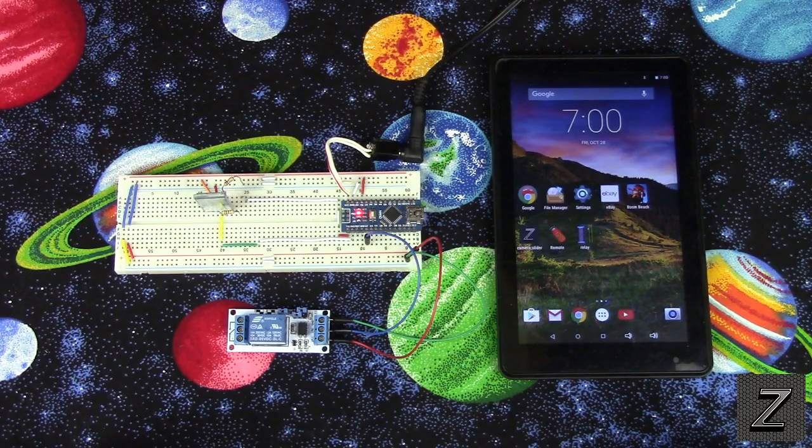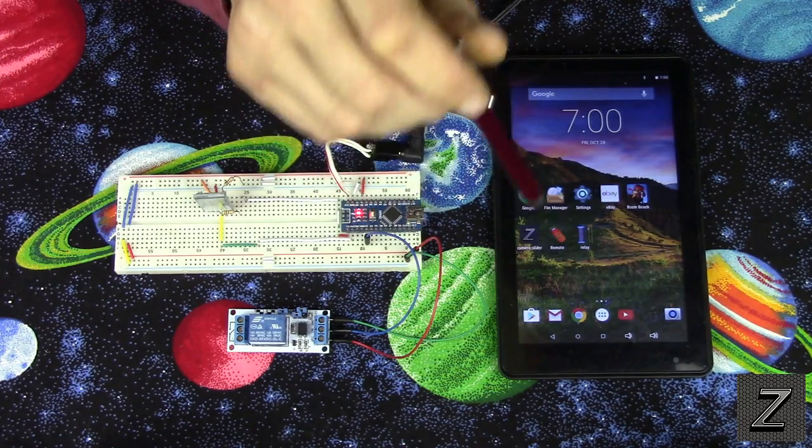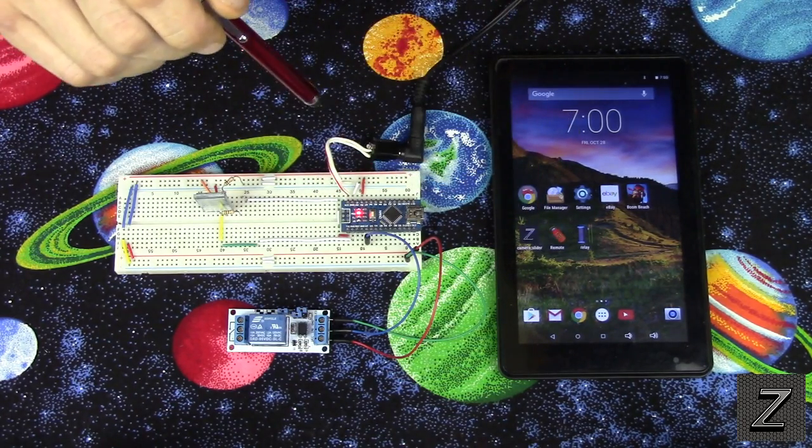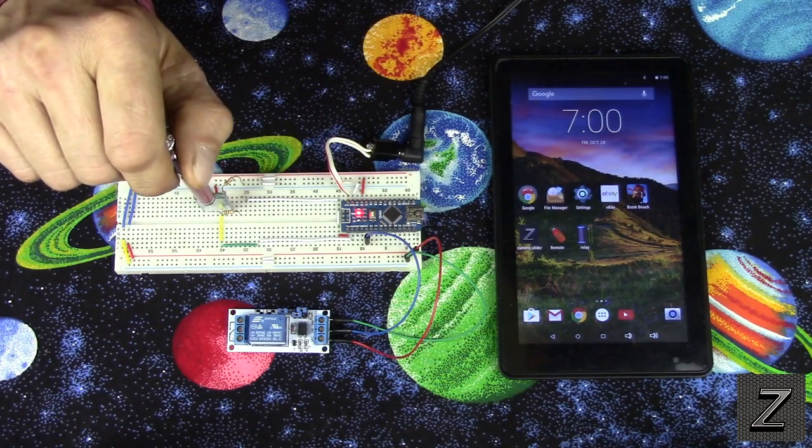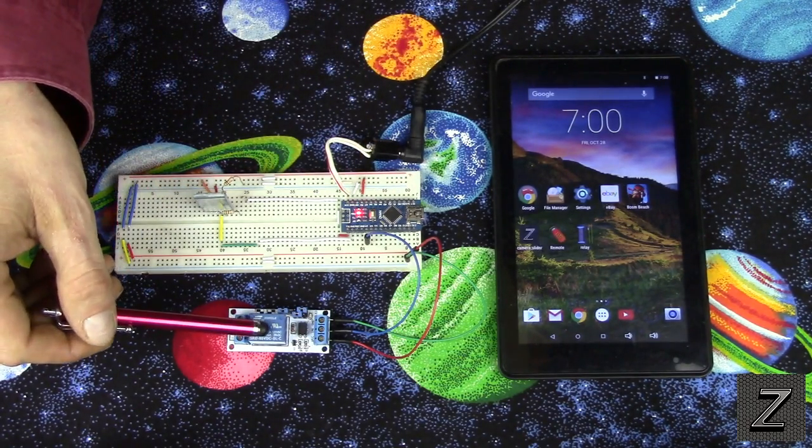Hello and welcome to the Z-Hot. Today I'd like to show you how you can use your Android device with an Arduino board and a Bluetooth module to control up to 12 relays.